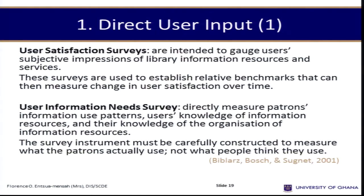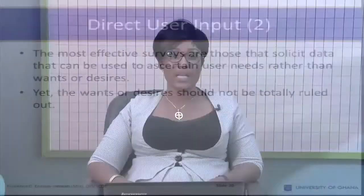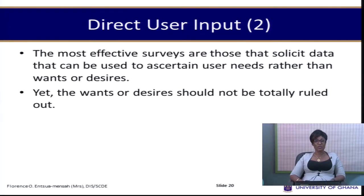A user information needs survey looks at three things: measuring patrons' information use patterns, the user's knowledge of information resources, and their knowledge of how the resources have been organized. The most effective surveys solicit data that can be used to ascertain user needs rather than just wants — though we shouldn't ignore their wants and desires entirely.